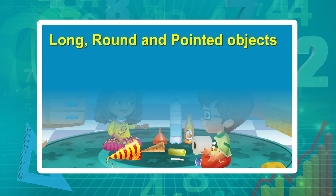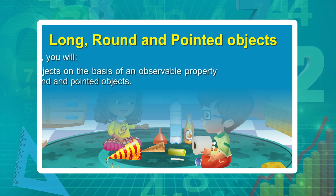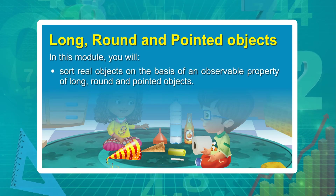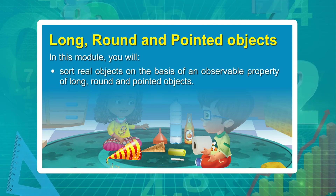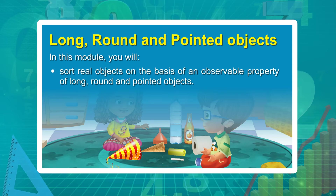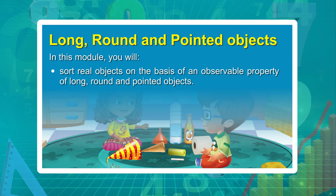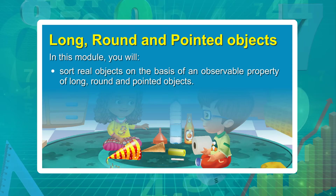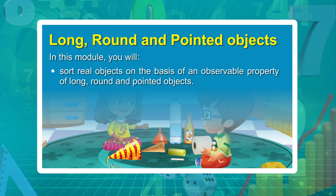Long, Round and Pointed Objects. In this module, you will sort real objects on the basis of an observable property of long, round and pointed objects.